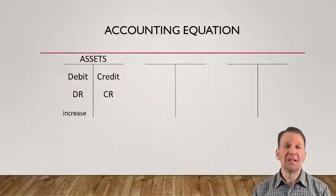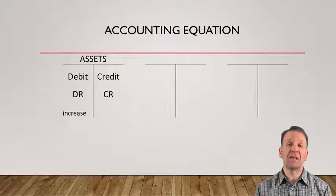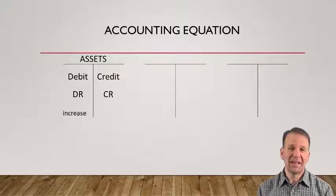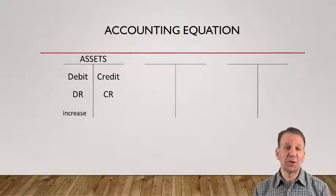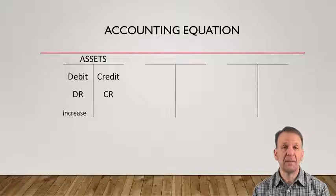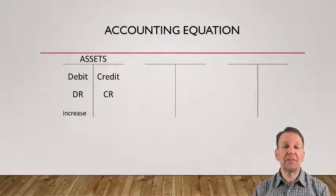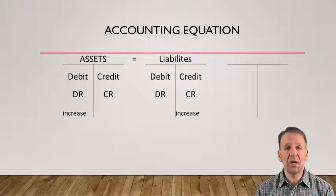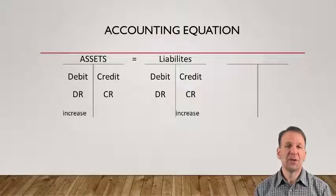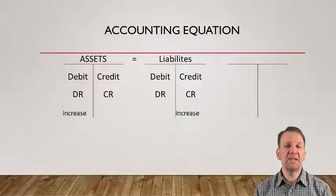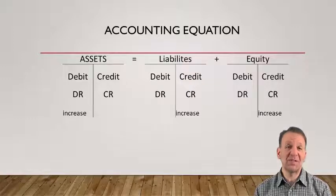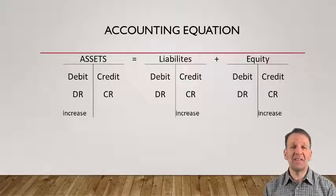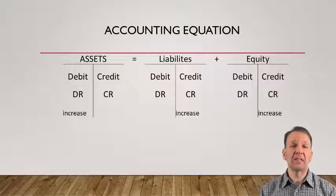Let's look at the accounting equation and how debits and credits affect different accounts within it. Assets increase with debits, and the opposite would be true — they decrease with a credit. I like to remember that assets are on the left side of the accounting equation, so they increase on the left side with a debit. Liabilities, which are on the right side of the accounting equation, increase with a credit. Credits are on the right side of the T-account and on the right side of the accounting equation, and increase on the right side with a credit.